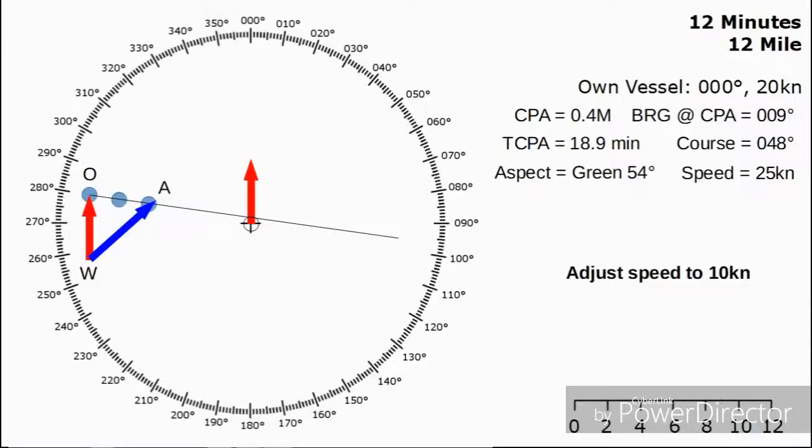What I'm going to do is I'm going to adjust my speed to 10 knots. I've made a bold alteration of speed. I've halved my initial speed.